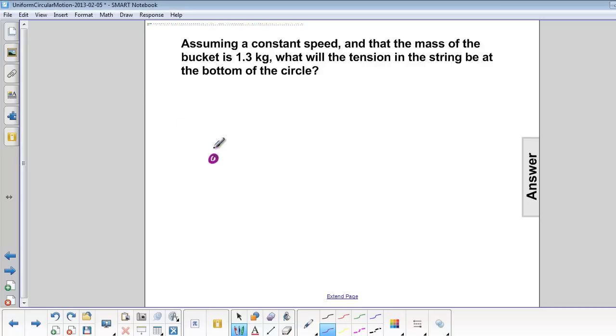At the bottom of the circle, the force of tension is up, and it is larger than mg, which is down, and acceleration is up.